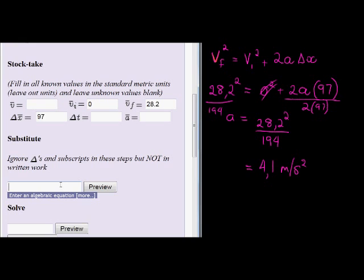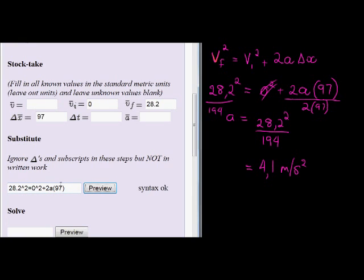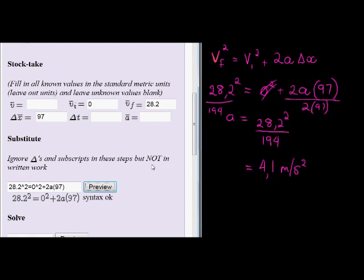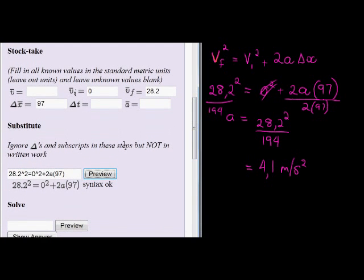So I'm going to use the first one where we said 28.2 squared is equal to 0 squared. So you can see I'm just substituting perfectly into my equation to a 97. Preview says my syntax is okay. That looks correct accordingly. And now if I put in my final answer, a is equal to 4.1 meters per second squared. Perfect.